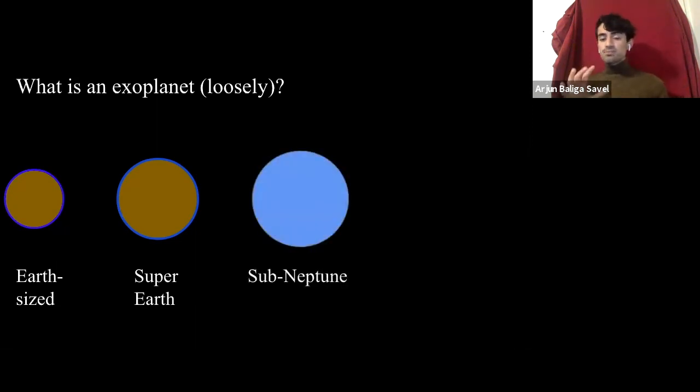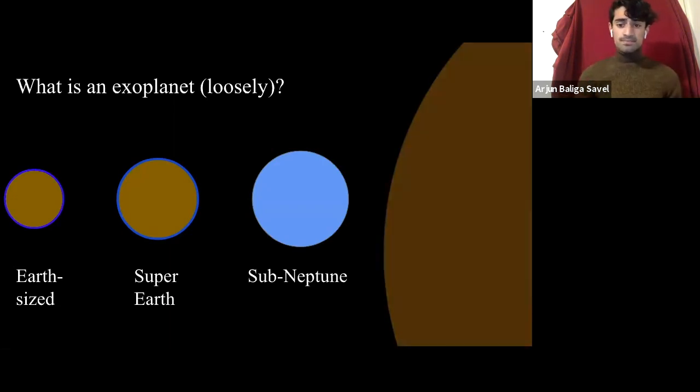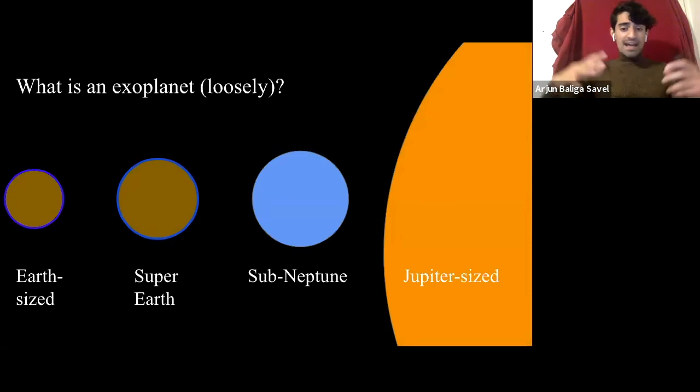Next, we have super-Earths. And as you might be able to glean from the name alone, they're just a lot like Earth-sized planets, they're just super, they're larger. And again, they can also have this thin atmospheric layer encasing them. But once you start to move above about one and a half times the Earth's radius, the bulk properties of your planet start to change drastically. Namely, you start to become predominantly gas-dominated. And those gases largely being hydrogen and helium, the most common elements in the universe.